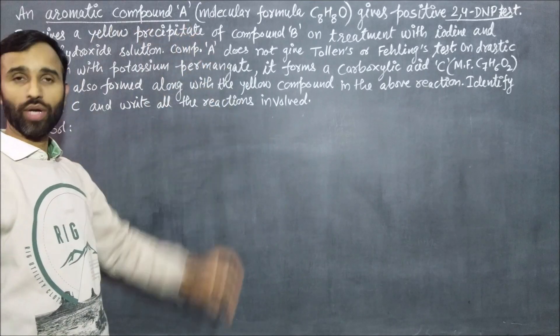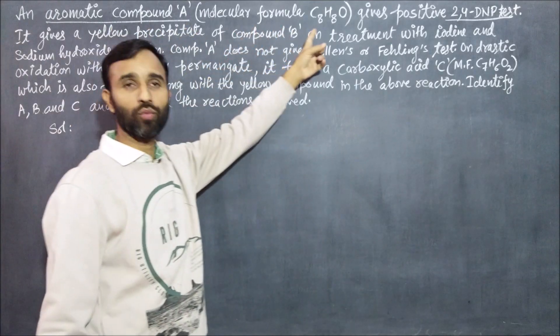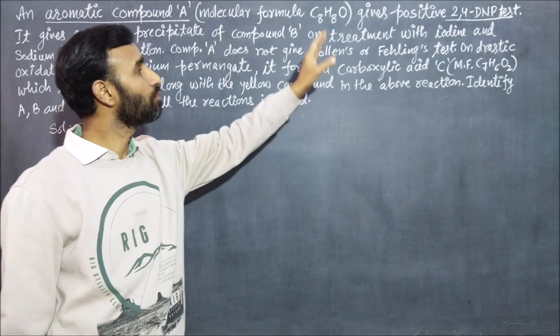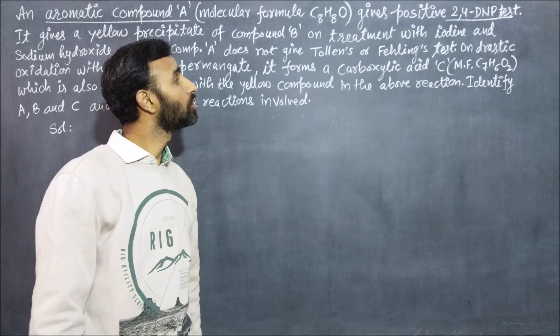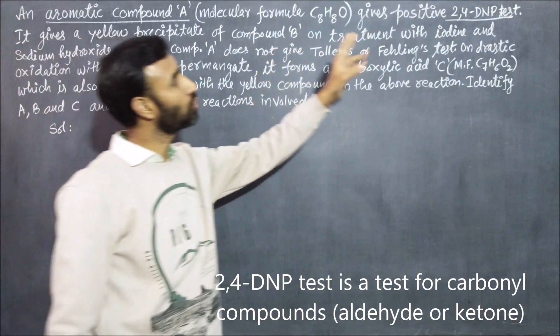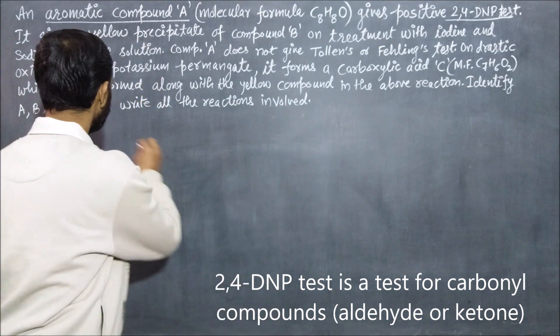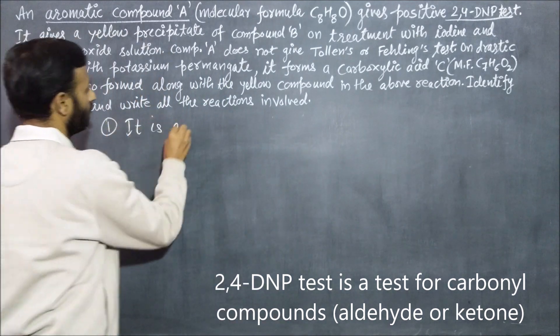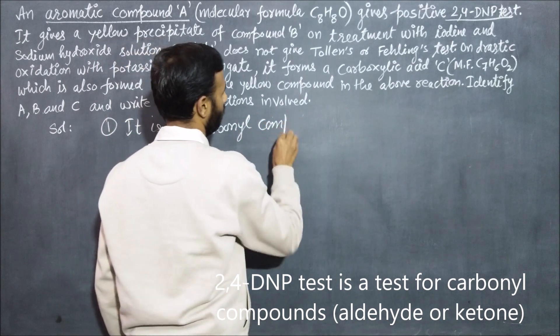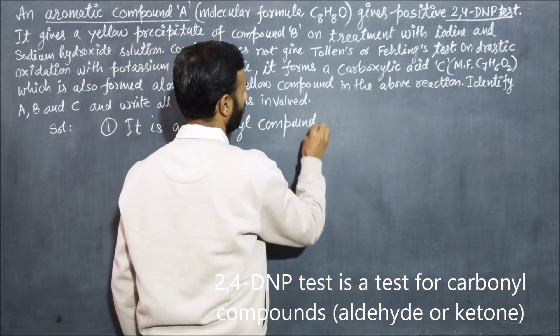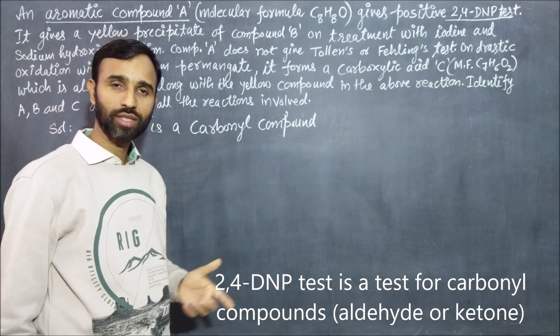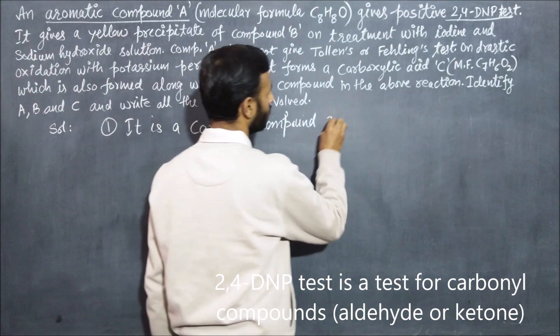An aromatic compound A having molecular formula C8H8O gives positive 2,4-DNP test. This means it is a carbonyl compound because 2,4-DNP derivative test is given by aldehydes or ketones.